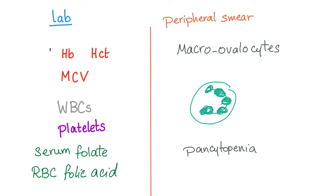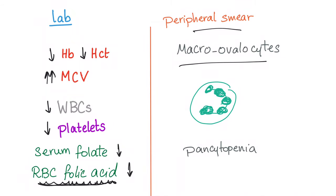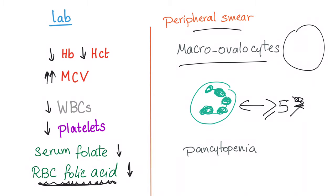Lab results: hemoglobin and hematocrit decreased — that's the definition of anemia. MCV is increased — macrocytic anemia. White blood cell count and platelets may be decreased due to pancytopenia. Serum folate is decreased. RBC folic acid is decreased and is a more sensitive test. Peripheral smear shows macro-ovalocytes, i.e. large RBCs. Hypersegmented neutrophils means five or more lobes in at least five percent of neutrophils. Pancytopenia may also be seen on peripheral smear.